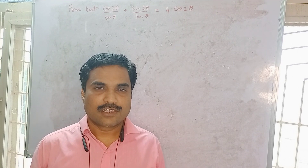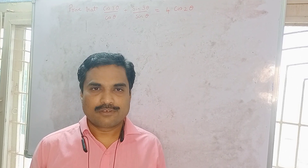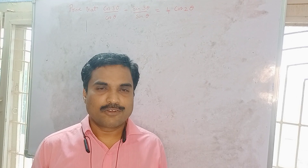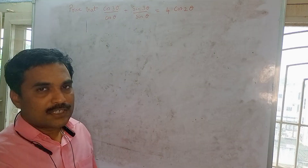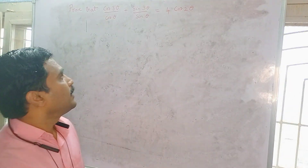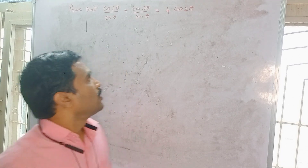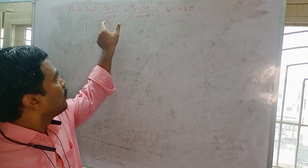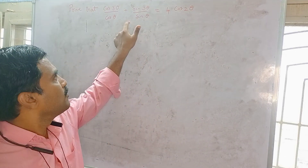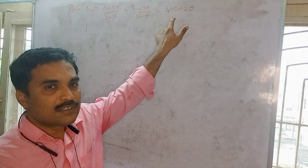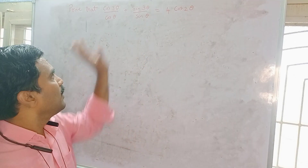Welcome to my channel Yanam Takshashila. In this new video I am going to solve a mathematical problem under trigonometry. The problem is: prove that cos 3θ / cosθ + sin 3θ / sinθ = 4cos 2θ. To prove this means we have to show left hand side equals right hand side, so we have to simplify the left hand side to arrive at the right hand side, which is 4cos 2θ.